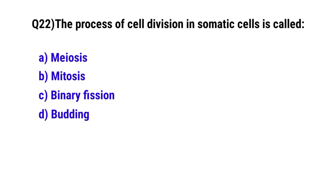Question No. 22: The type of cell division in somatic cells is? The correct option is B: Mitosis.